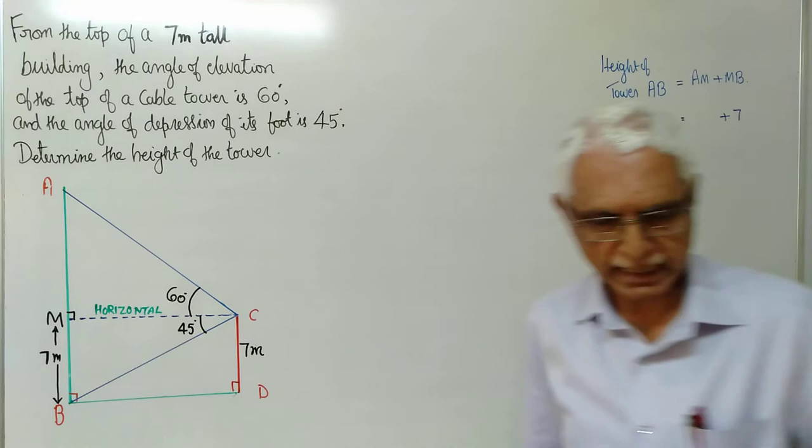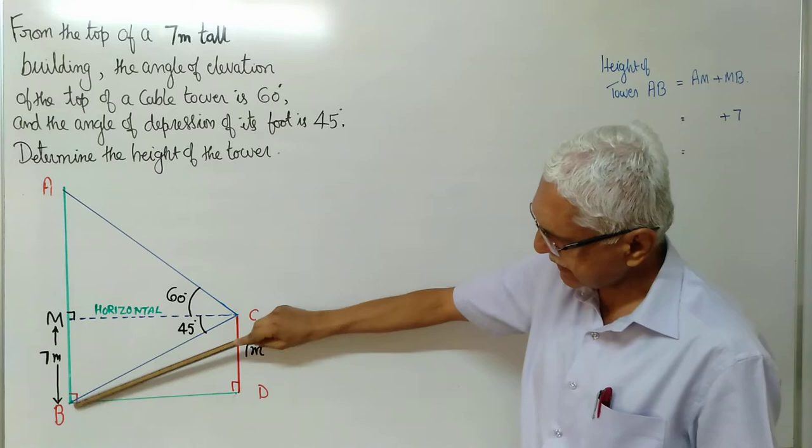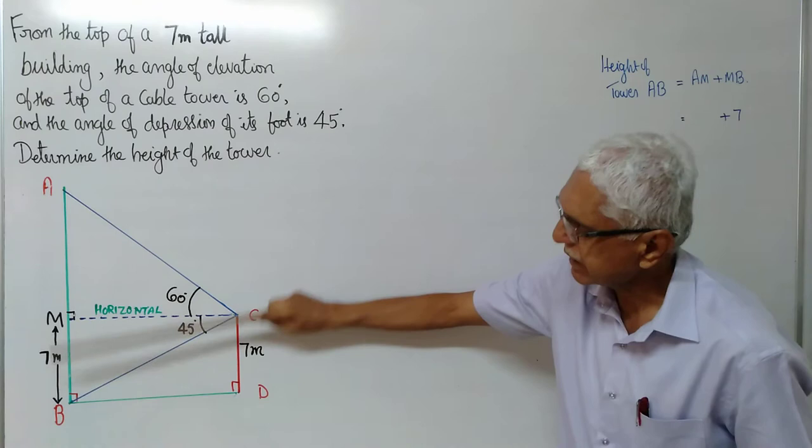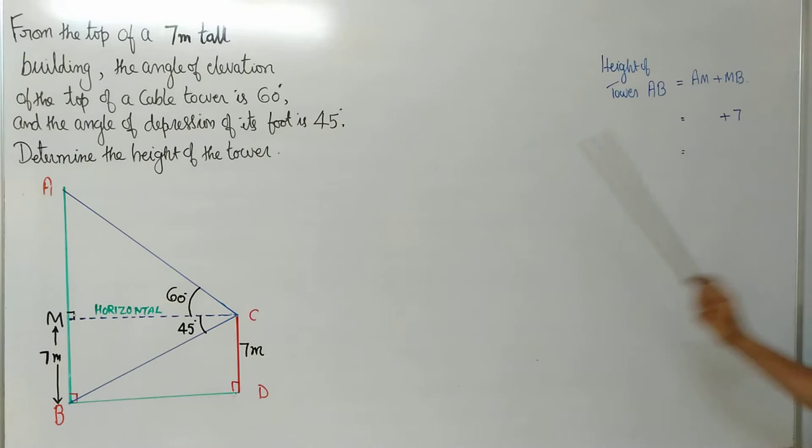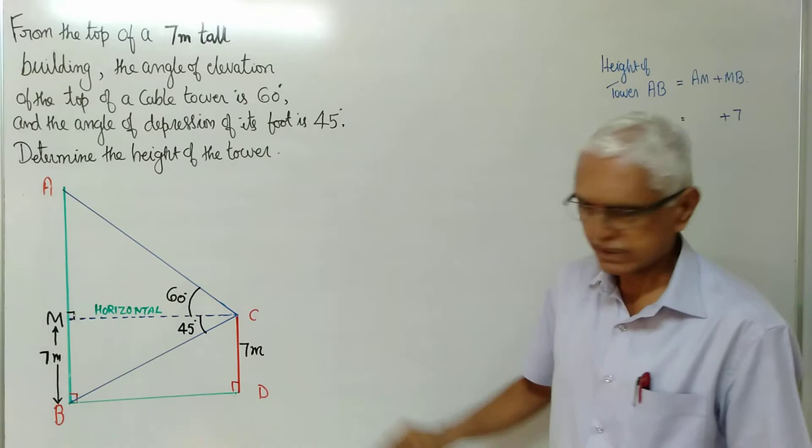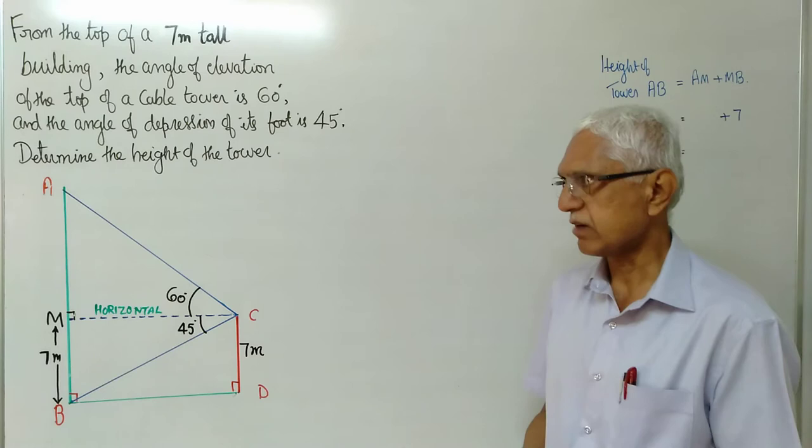Now I need to find out the height of AB. AB is given by AM plus MB. Height of the tower AB is given by AM plus MB. We do not know AM, keep it as A. MB we know it is 7 meter. It is 7 because this forms a parallelogram. So if this is 7, opposite side is 7. Now all I have to find out is AM. Let me begin the journey of finding AM.